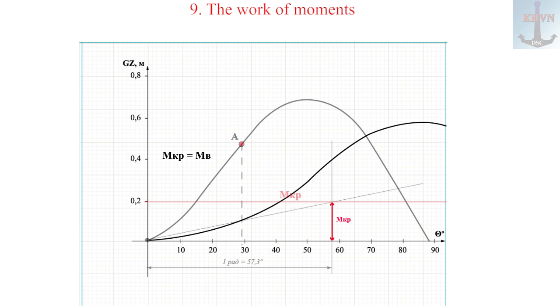Two: at the end of one radian, perpendicularly the previously calculated healing moment or its arm. Three: from the origin of coordinates, an oblique straight line is drawn to healing moment. This is the work of the moment. Four: the point of intersection of the DSD curve and the oblique straight line is the angle of dynamic list on the abscissa axis for this healing moment.